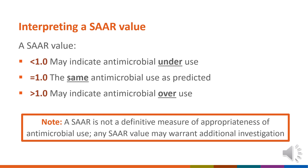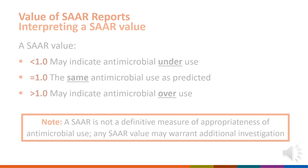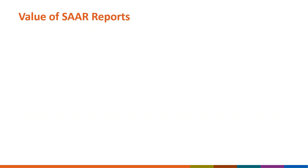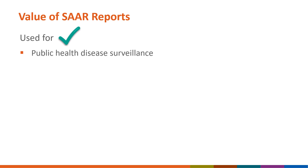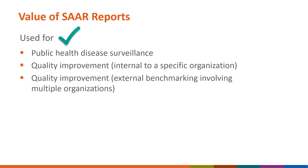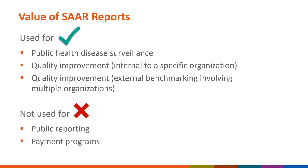A SAR above 1.0 indicates more antimicrobial use than predicted and may suggest overuse. Note that a SAR is not a definitive measure of the appropriateness of antimicrobial use, and any SAR value may warrant additional investigation. SARs are a valuable metric for a variety of purposes. SARs can be used for public health disease surveillance, an organization's internal quality improvement efforts, and for benchmarking against external organizations to aid in quality improvement. SAR reports are not used for public reporting, payment programs, or regulatory and accreditation programs.